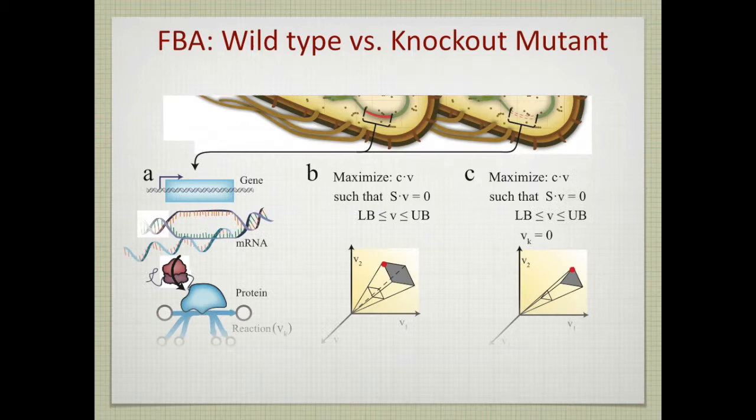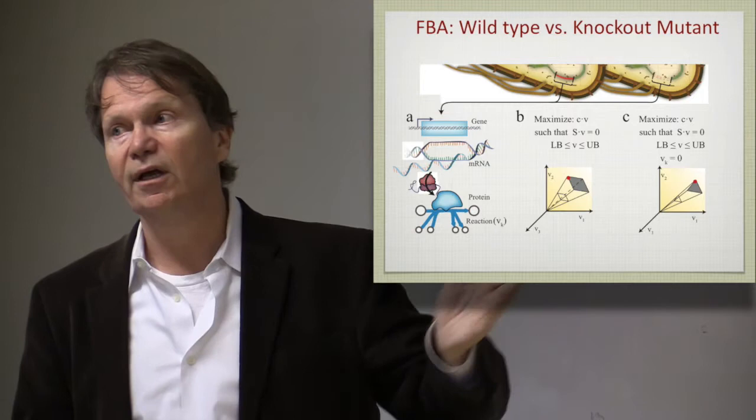And I think this is shown here in one of Nate Lewis's illustrations. So on top, we have two cells, one with a gene and one without a gene. Panel A shows these associations. But from a mathematical standpoint, we'll either have case B or C. Case B is when you had the gene and you have a full solution space. It can calculate an optimal state indicated by the red dot. If the gene is gone, then the solution space shrinks because all the phenotypic states that use that gene product are no longer permissible. And you may calculate now a different optimal state.